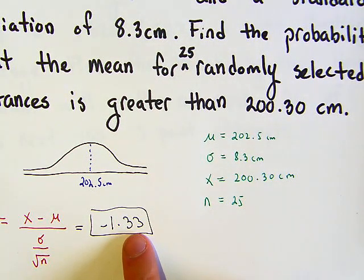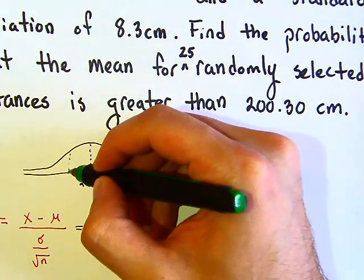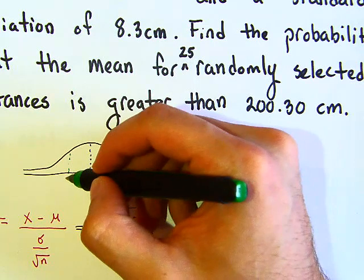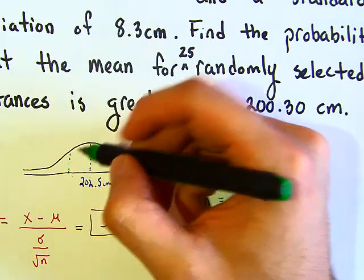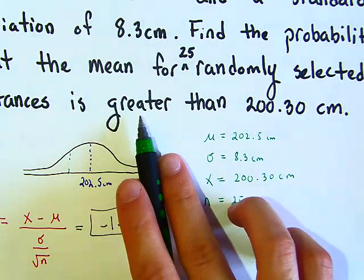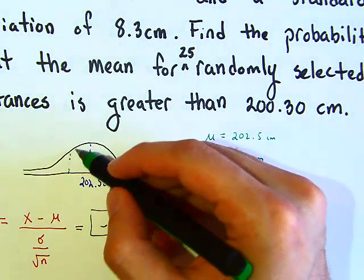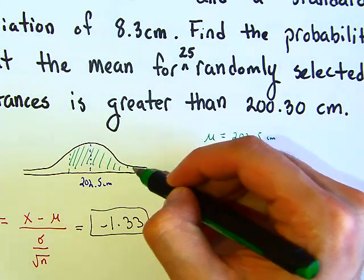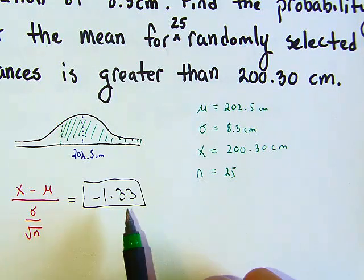So here, if this is our z value for negative 1.33, where is that z value? It's somewhere over here, right? This is one negative one standard deviation to the left. And what the question is saying, we want to know what's greater than this, so we want to find this area over here.